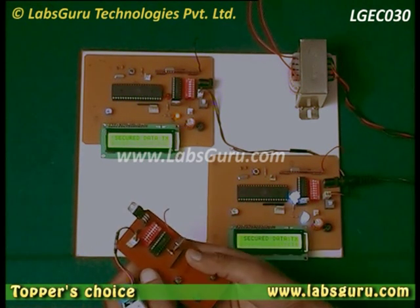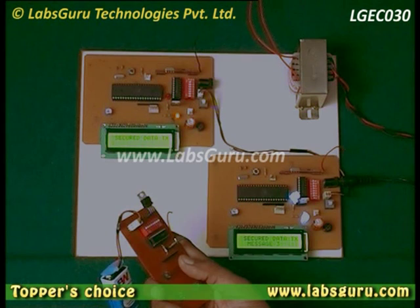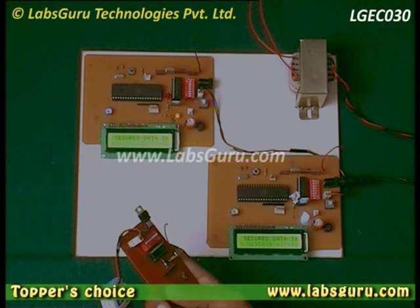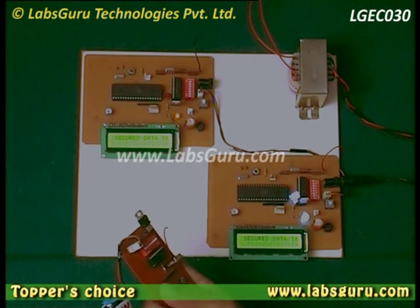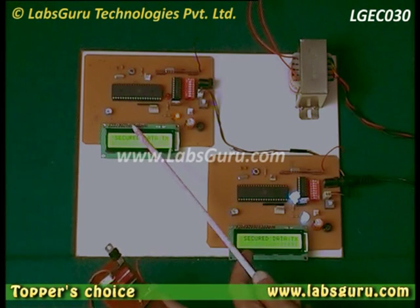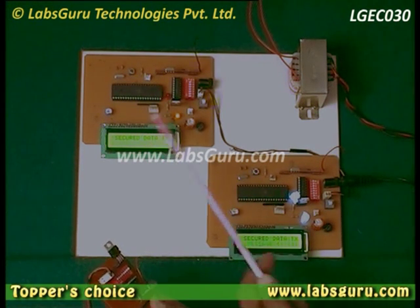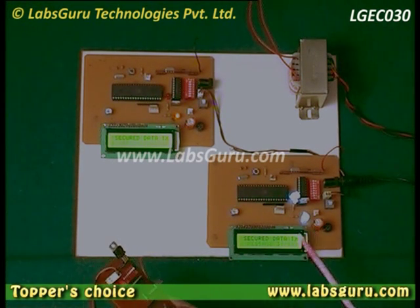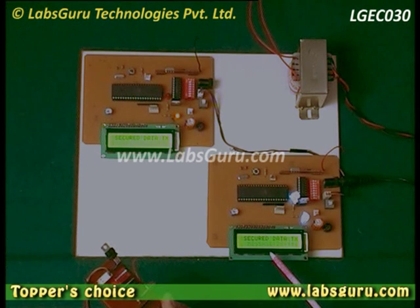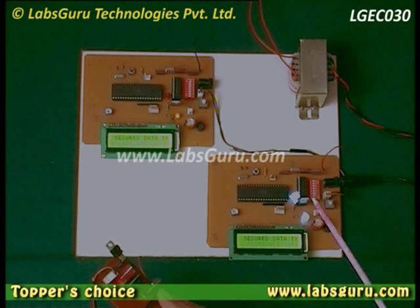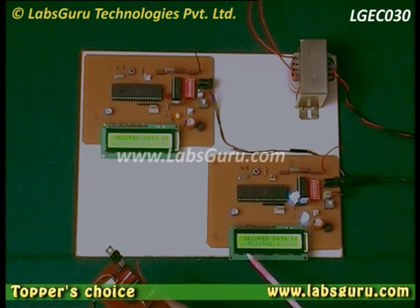The data or message that we transmit here is sent to that matched receiver only, and no message is transmitted to the other receiver. You can see that as you press different keys, different messages are displayed on the LCD.